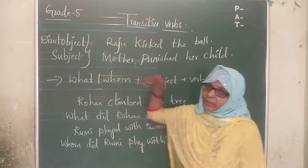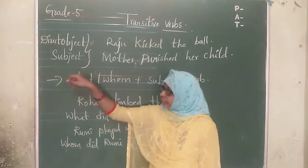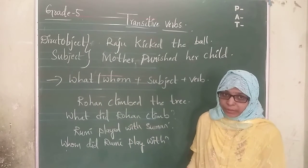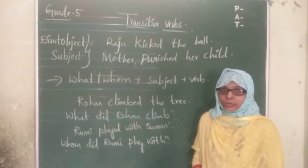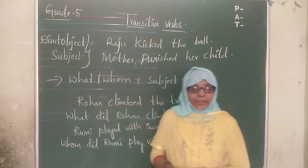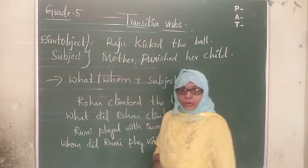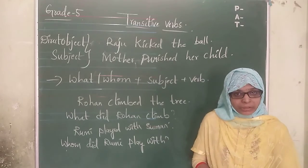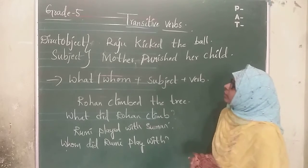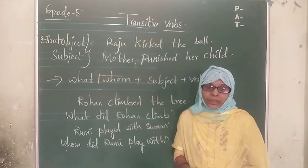So friends, transitive verbs contain a direct object and a subject. Subject means it might be a noun or pronoun in the given sentence. Direct object means it might be a person or a thing. This is the introduction of transitive verbs, children. Thank you.